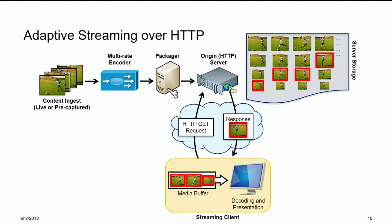This is the overall workflow we have today. We have content ingest — live or pre-captured — going through a multi-rate encoder or transcoder, generating multiple versions. Then you package them, whether HLS, DASH, CMF, or whatever format you prefer. You put the files on the origin server, with a CDN in between. The client is a simple HTTP client sending GET requests and getting responses, fetching individual short media segments — a couple of seconds, six seconds, or ten seconds long. These are placed in the playback buffer back-to-back, and if packaging is done carefully the transition from one segment to another is smooth, though there may be resolution or quality changes.